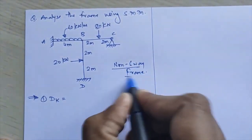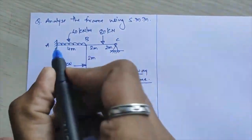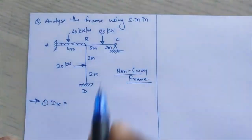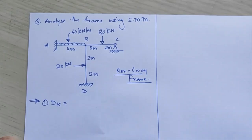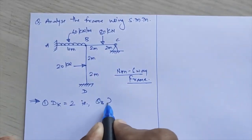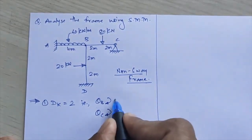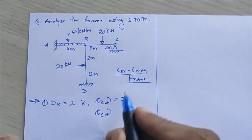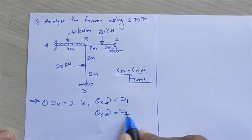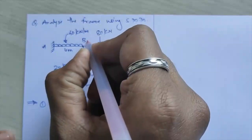Now we will do the analysis. DK for this frame: joints A and D are fixed supports, so DK at those points will be zero. B will be treated as a rigid joint, and C is given as a simple support or hinge support. So the total DK will be equal to 2 — those will be theta B (D1) and theta C (D2).